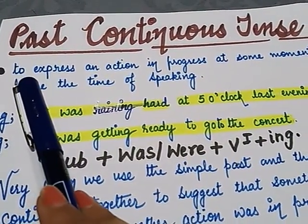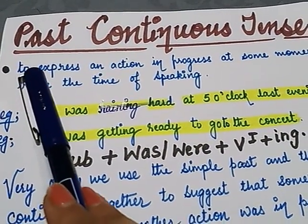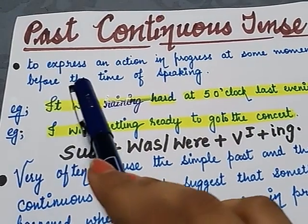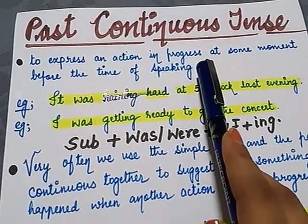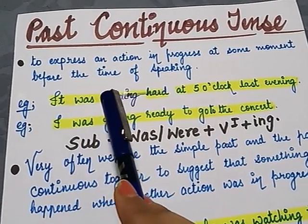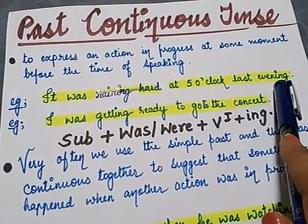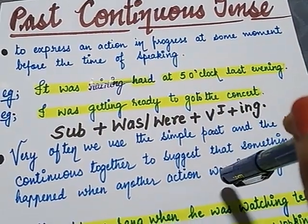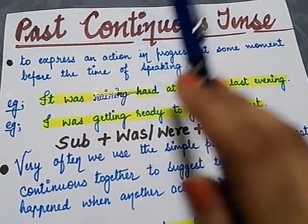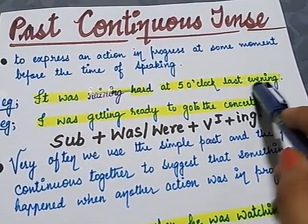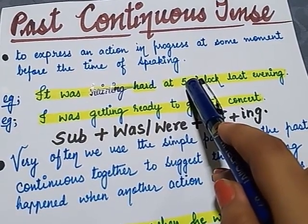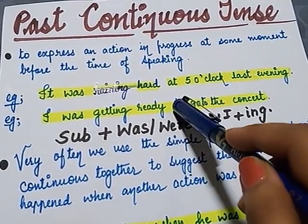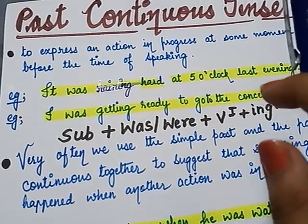Just see the first use of past continuous tense. We use past continuous tense to express an action in progress at some moment before the time of speaking. Let us understand with the help of an example: 'It was raining hard at 5 o'clock last evening.' Suppose somebody is saying these words now, but this action was in progress at some moment — last evening, at 5 o'clock.